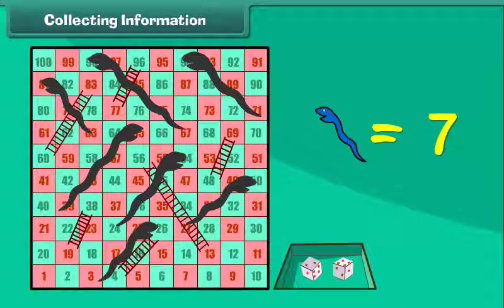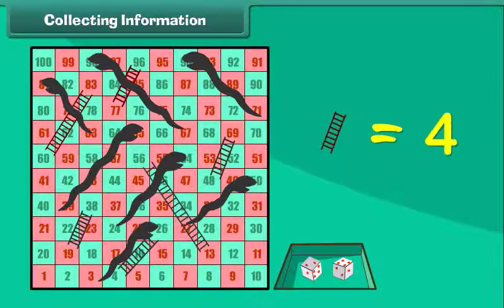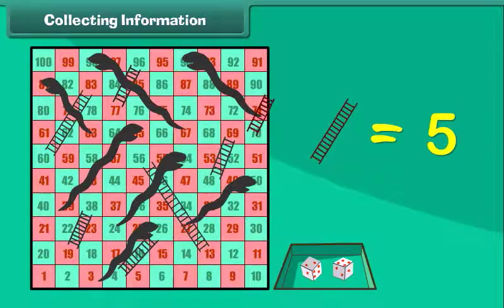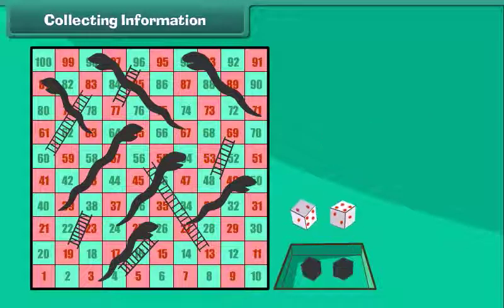Now we count the total number of ladders. 1, 2, 3, 4, 5 and 6. There are 6 ladders. How many dice do you see here? There are 2 dice.